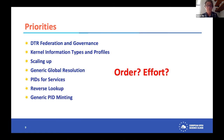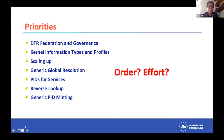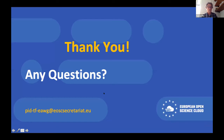Our first-priority gap is data type registries and federation of registries, including governance models — proof of concepts exist but have not found widespread adoption. Second priority: kernel information types and profiles, the metadata schemata for PID records. Then: scaling up, a generic global resolution service, and PIDs for services. Reverse lookup and generic PID minting were seen as lower priority. This is an early draft — we intend to bring this to the architecture working group and then to a wider audience for consultation.